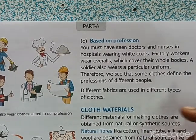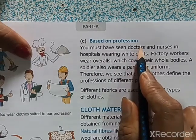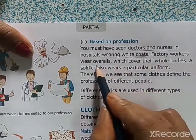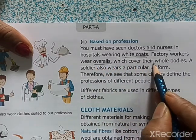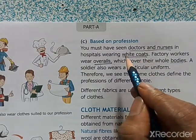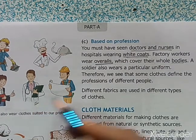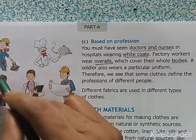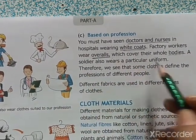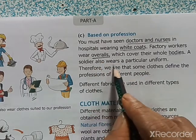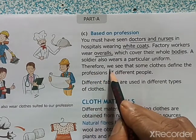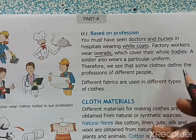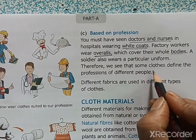We also have clothes based on profession — the work that we do to earn money. Doctors and nurses in hospitals wear white coats over their clothes. Factory workers wear overalls, which cover their whole body. A soldier also wears a particular uniform. So we see that some clothes define the professions of different people, and these are known as uniforms.